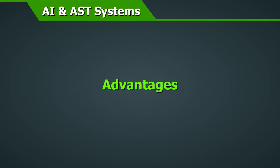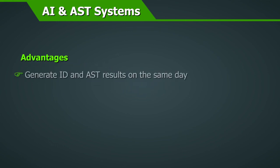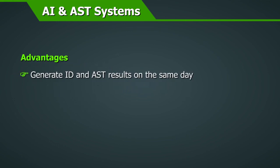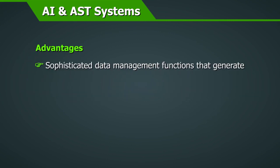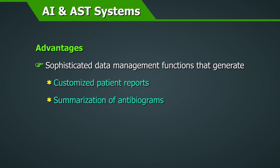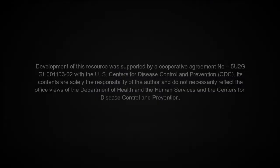Advantages of automated AST platforms: The advantage of using automated instruments is their ability to generate identification and AST results on the same day as the isolated colonies appear on primary culture. Results can be obtained ranging from 3 to 12 hours on average. In addition, these computer-controlled processes often allow a range of sophisticated data management functions that generate customized patient reports, summarization of antibiograms, and generation of epidemiological reports.